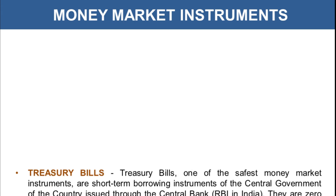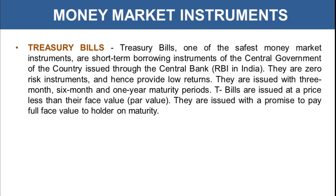Now let's learn about money market instruments. The first is the treasury bill. Treasury bills are one of the safest money market instruments — short-term borrowing instruments of the central government, issued through the central bank, that is RBI in India. They provide a very low rate of return but are the most safe and secured money market instrument. These are zero-risk instruments since they are backed by the government, and thus provide low returns.